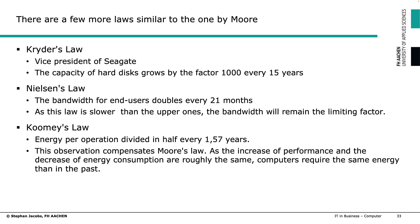As an analog to Moore's Law, there are a few other laws describing similar phenomena. Kryder's Law — Kryder was vice president of Seagate — argues that hard disk capacity grows by a factor of 1000 every 15 years. Nielsen argued the same about network bandwidth, where doubling happens every 21 months. And Koomey argued that energy consumption per computation halves every 1.57 years. The underlying technology of these three laws differs, but the tendency goes in the same direction: exponential growth.